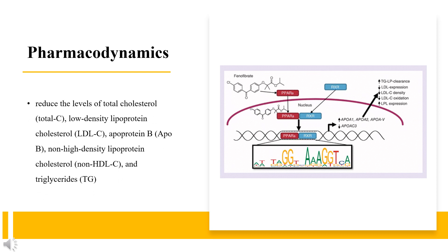Ezetimibe was shown to reduce the levels of total cholesterol (total C), low-density lipoprotein cholesterol (LDL-C), apoprotein B (Apo-B), non-high-density lipoprotein cholesterol (non-HDL-C), and triglycerides (TG), and increase high-density lipoprotein cholesterol (HDL-C) in patients with hyperlipidemia. This therapeutic effect was more profound when ezetimibe was co-administered with a statin or fenofibrate compared to either treatment alone. In clinical trials involving patients with homozygous and heterozygous familial hypercholesterolemia and those with sitosterolemia, a recommended therapeutic dose of ezetimibe was effective in reducing LDL levels by 15–20% while increasing HDL-C by 2.5–5%.